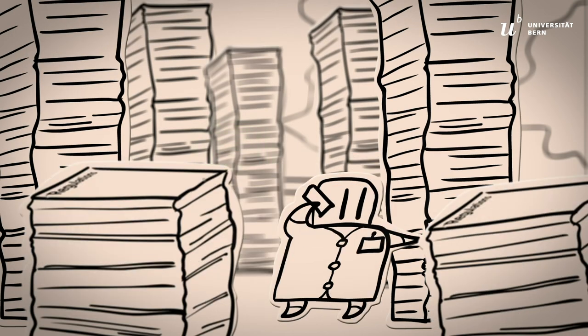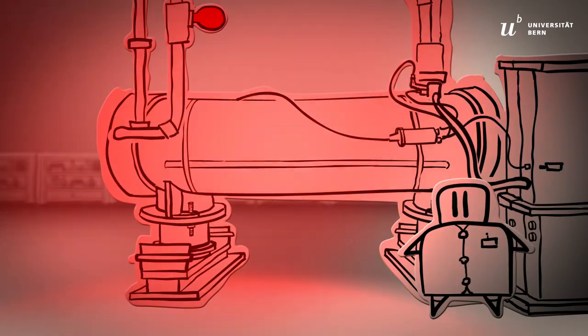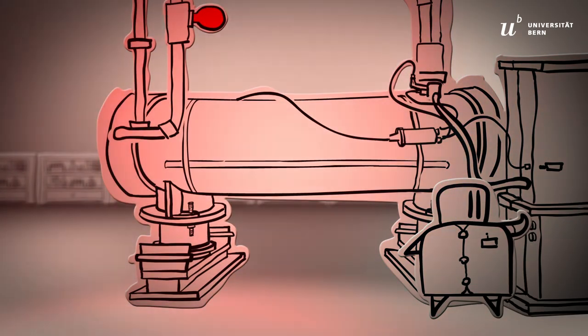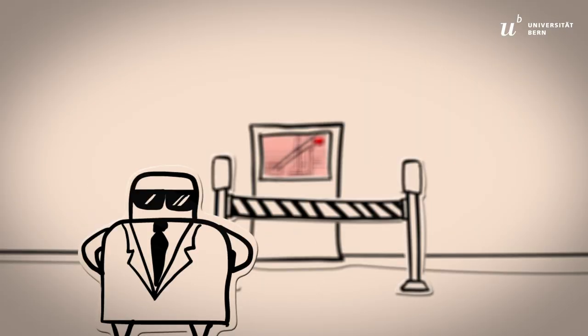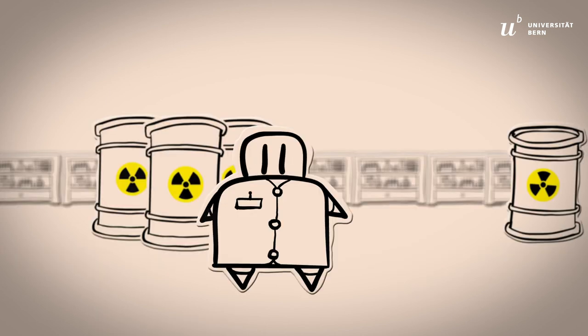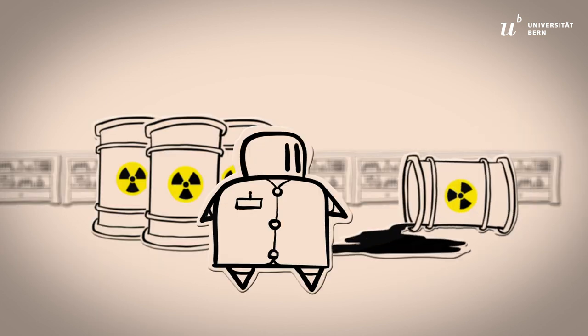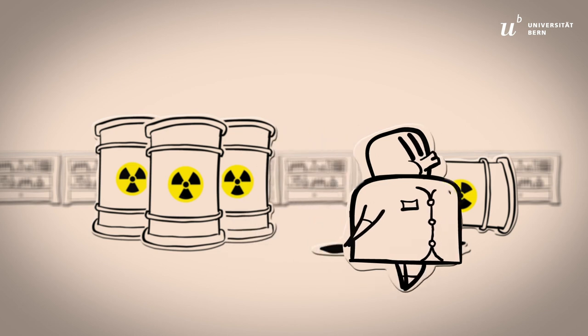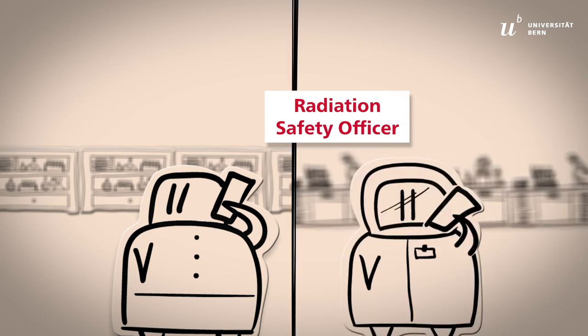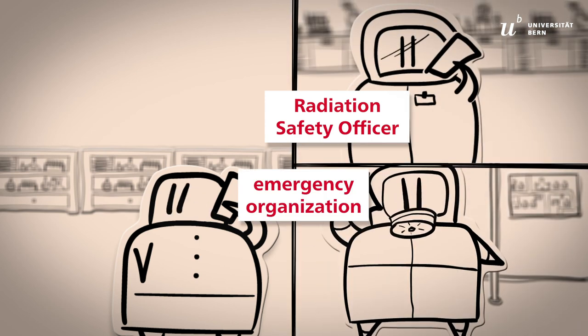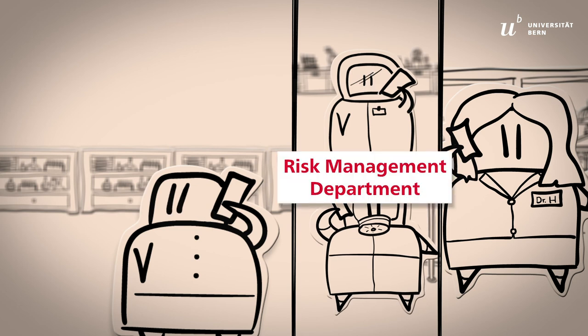Contact your radiation safety officer and the risk management department for further processing. In case of emergency, switch off sealed sources if possible, leave, lock off, and secure the area. In the event of a spill of unsealed sources, leave the contaminated area, alert the radiation safety officer and the emergency organization. Report any incident to the risk management department.